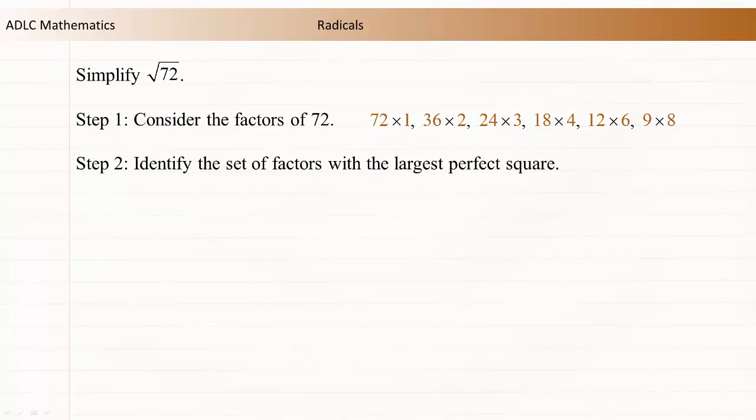Step 2: Identify the set of factors with the largest perfect square. 36 is the largest perfect square, so the correct set of factors is 36 times 2. Note that 4 and 9 are also perfect squares, but neither is as large as 36.